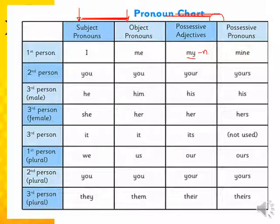Possessive adjectives are always followed by a noun. For example: my book, your mom, his bag, her dress, its tail, our school, your city.